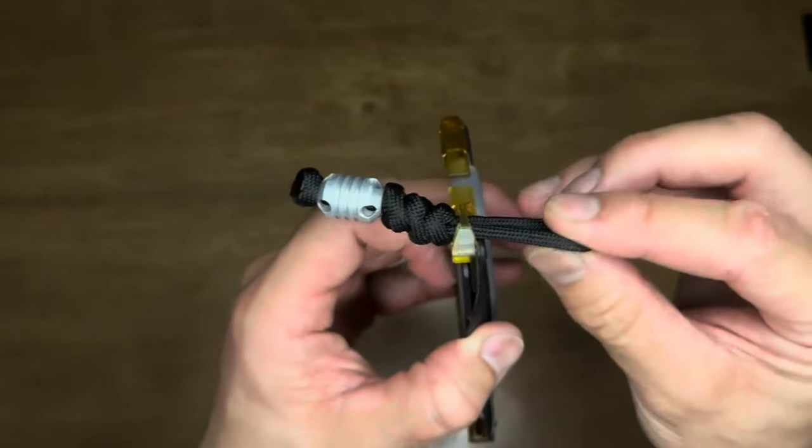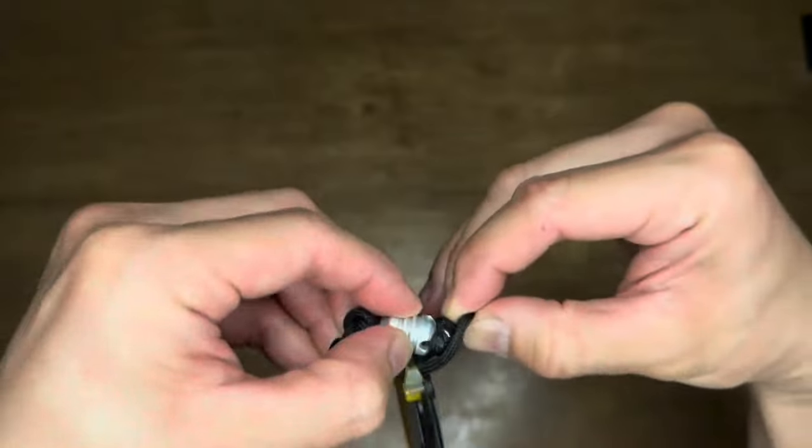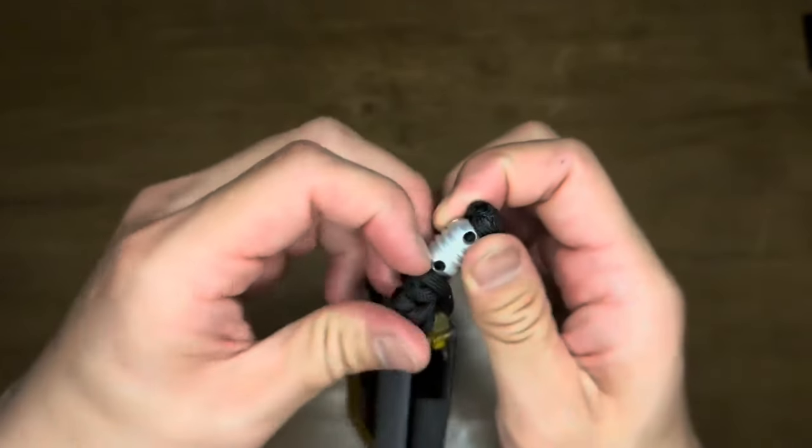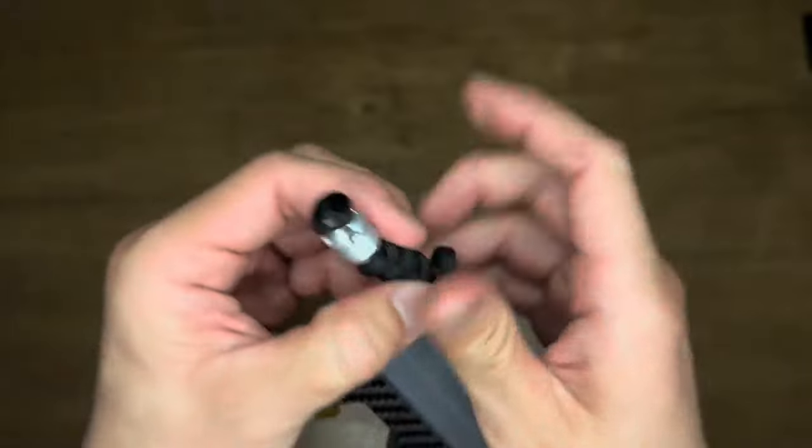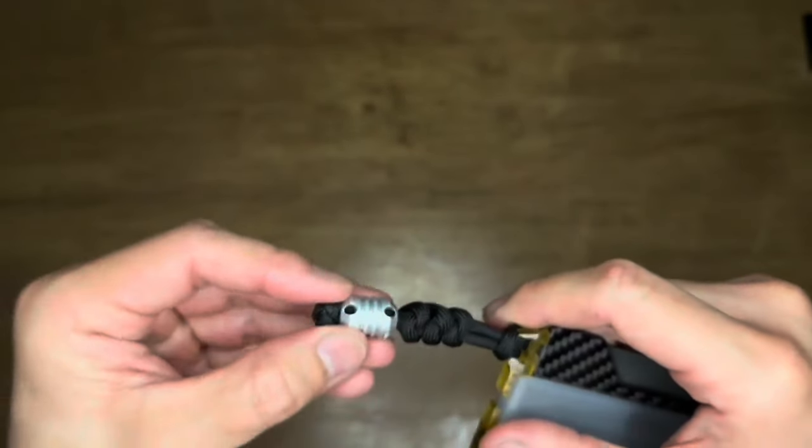Pull the loop tight and insert the other end of the lanyard through the loop. Then pull it tight again. And there it is.